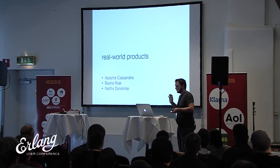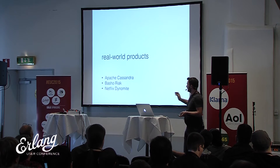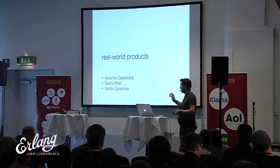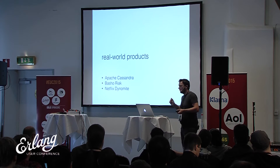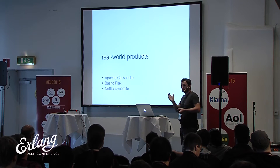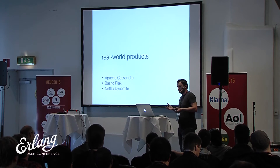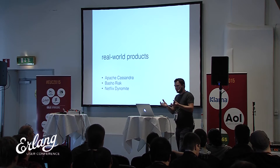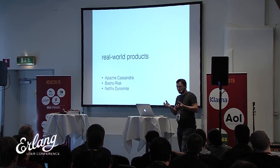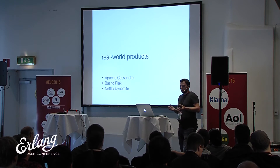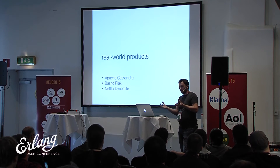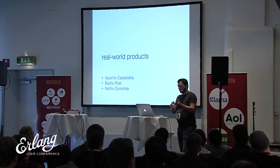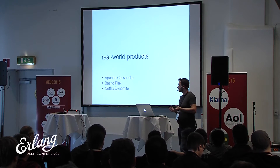The real-world products I mentioned: Apache Cassandra, Basho Riak, and Netflix Dynamite. Netflix Dynamite is a gossip system that lets you take any relational database and turn it into a distributed database. You take a MySQL server, take another MySQL server, set up Dynamite on those two or more nodes, and the transaction log from one node will be gossiped to other servers — effectively turning it into a distributed database where you can do partitioning and similar things.